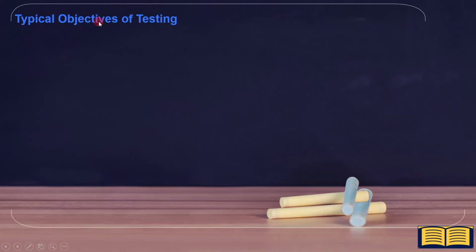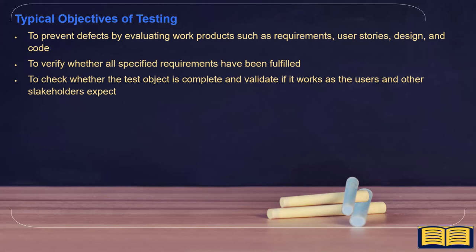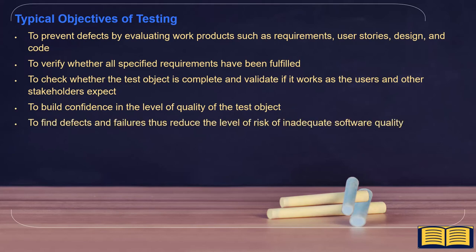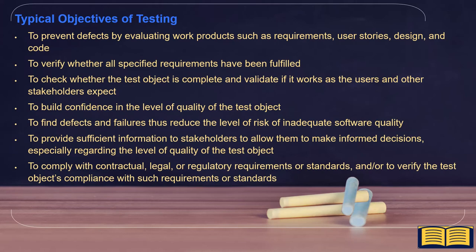The seven test objectives are: to prevent defects by evaluating work products such as requirements, user stories, design and code; to verify whether all specified requirements have been fulfilled; to check whether the test object is complete and validate if it works as the users and other stakeholders expect; to build confidence in the level of quality of the test object; to find defects and failures, thus reducing the level of risk of inadequate software quality; to provide sufficient information to stakeholders to allow them to make informed decisions, especially regarding the level of quality of the test object; and to comply with contractual, legal or regulatory requirements or standards, and to verify the test object's compliance with such requirements or standards.